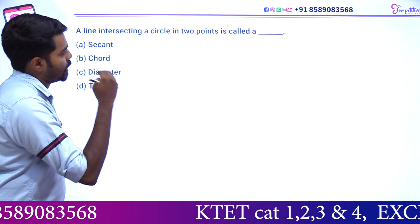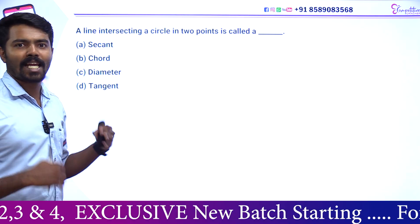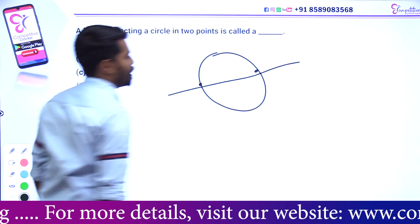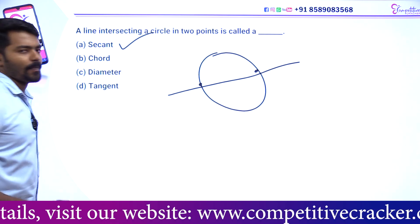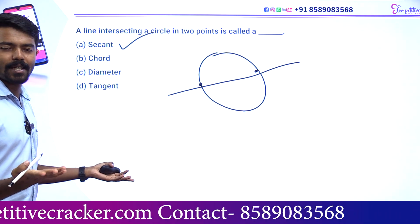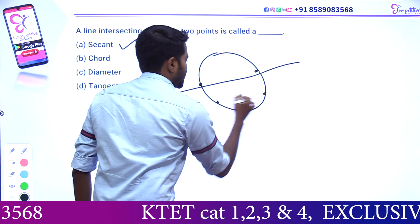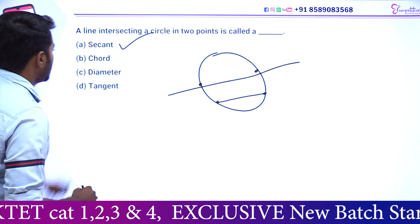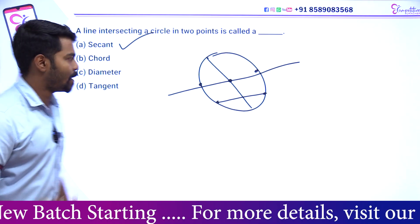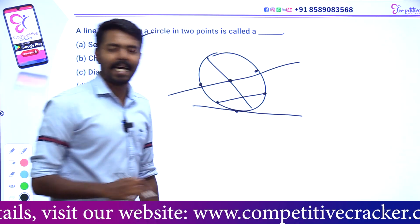A line intersecting a circle: this is called a secant, chord, diameter, or tangent — depending on the end point. If you have a tangent in a circle, you can see a tangent in a circle. It's clear. These four things are very important.